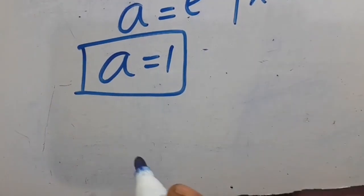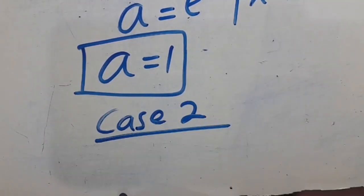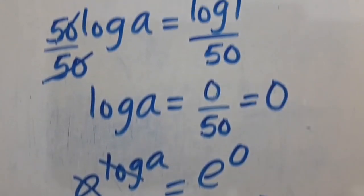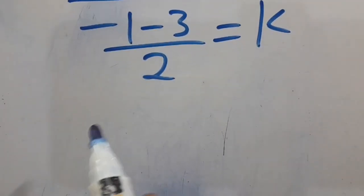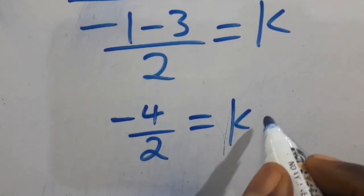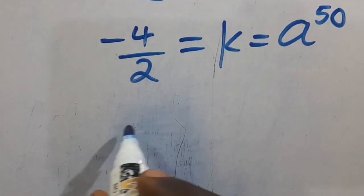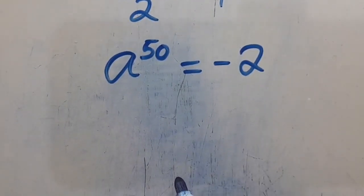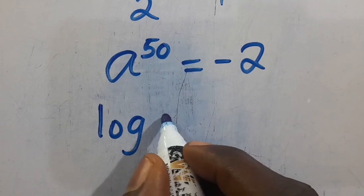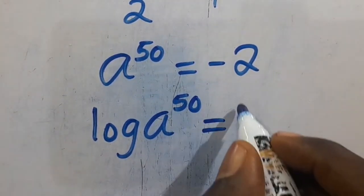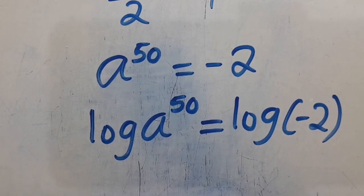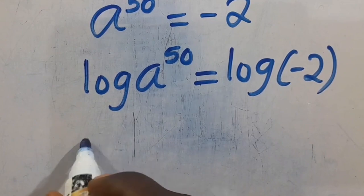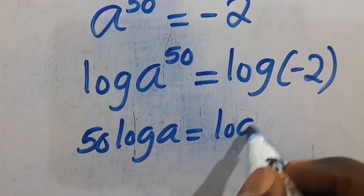Case 2: K equals negative 1 minus 3 divided by 2. So negative 1 minus 3 gives us negative 4, divided by 2 equals K, and K equals A to the power of 50. Rearranging, A to the power of 50 equals negative 4 divided by 2, which gives us negative 2. Introducing log to both sides: log of A to the power of 50 equals log of negative 2. This becomes 50 multiplied by log A equals log of negative 2.